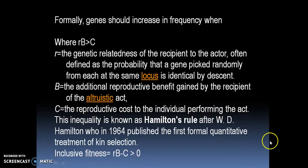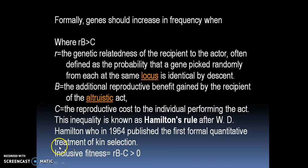What exactly is kin selection? I will discuss it in later slides. For inclusive fitness, one more formula: Rb minus C is greater than 0.